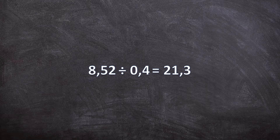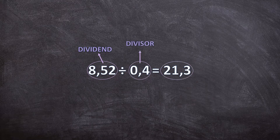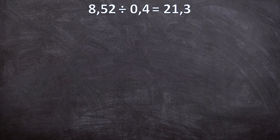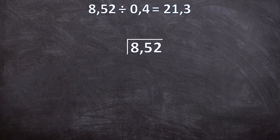Now let's get started with a quick recap of the terminology. The number we're dividing is called the dividend, the number we will be dividing with is called the divisor, and the answer is called the quotient. Let's look at this example and start by setting up the problem: we have our long division bar, the dividend goes inside the bar, and the divisor goes in front of the bar.